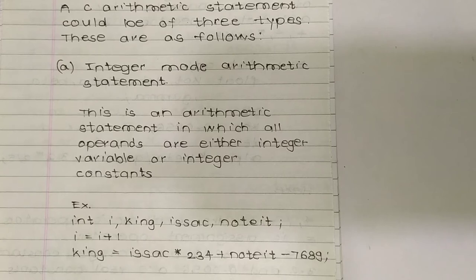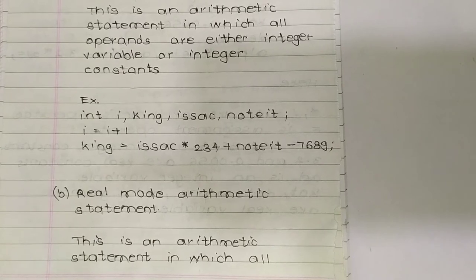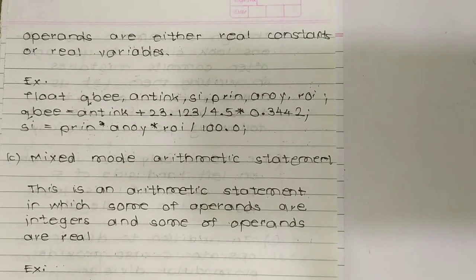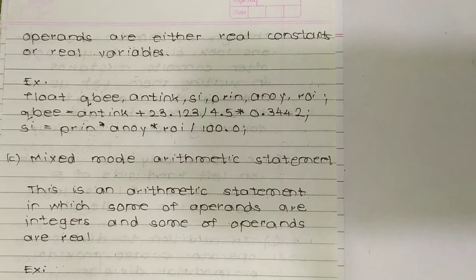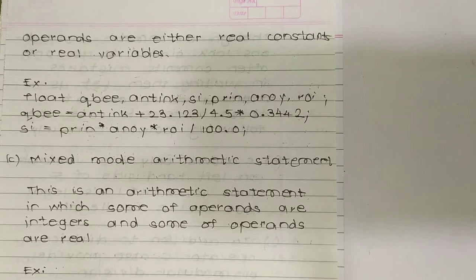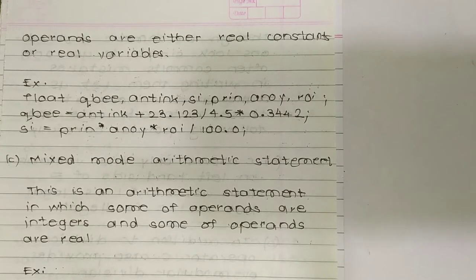The second type is Type B: real mode arithmetic statement. This is an arithmetic statement in which all operands are either real constants or real variables. For example: float qb, antique, si; and qb = antique + 23.123 / 4.5 * 0.5. In this type of statement, float is used since operands are either real constants or real variables.